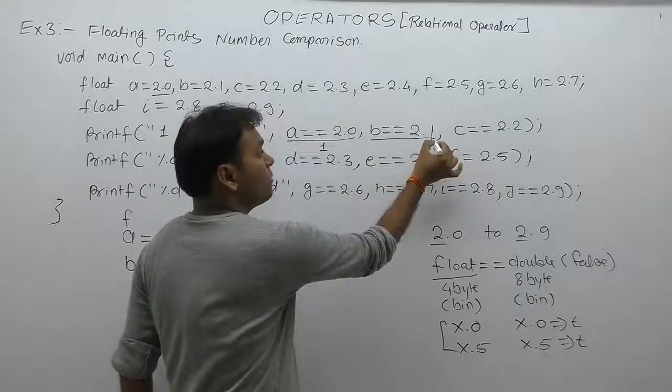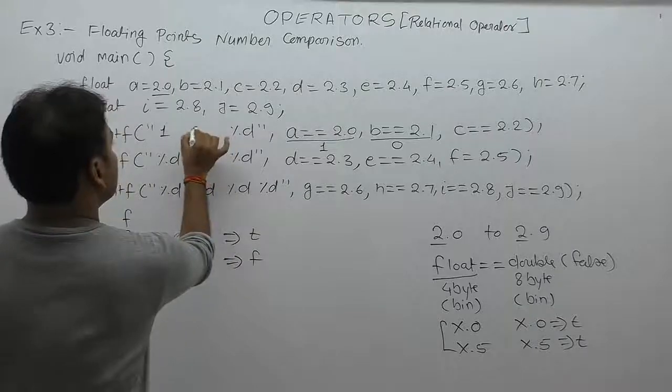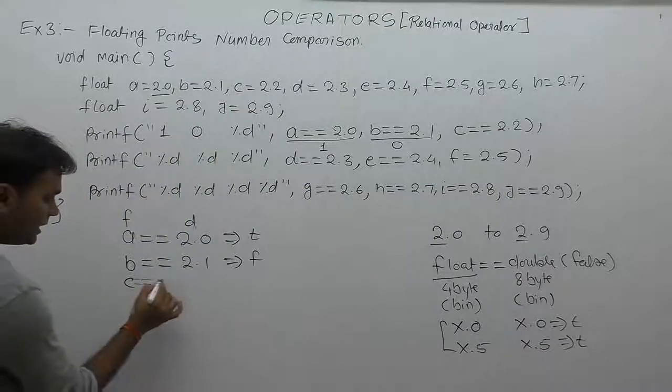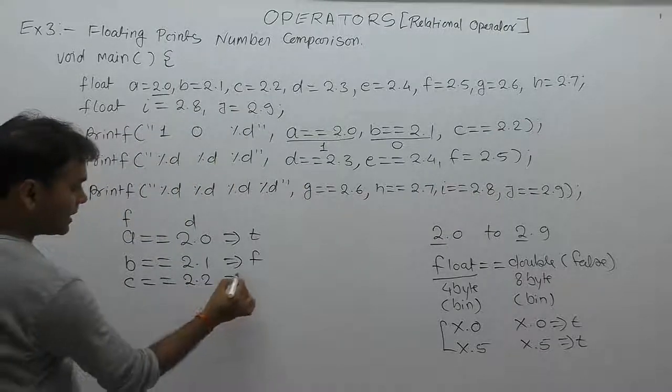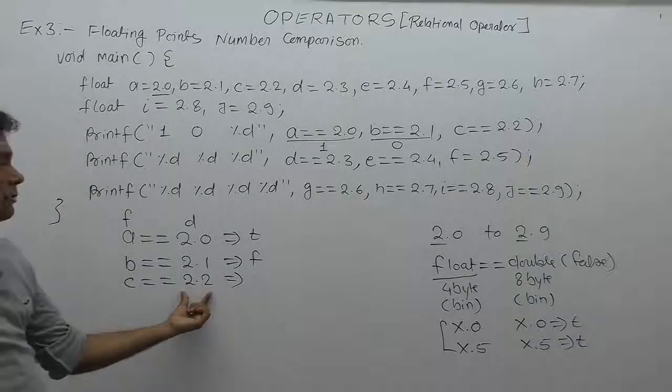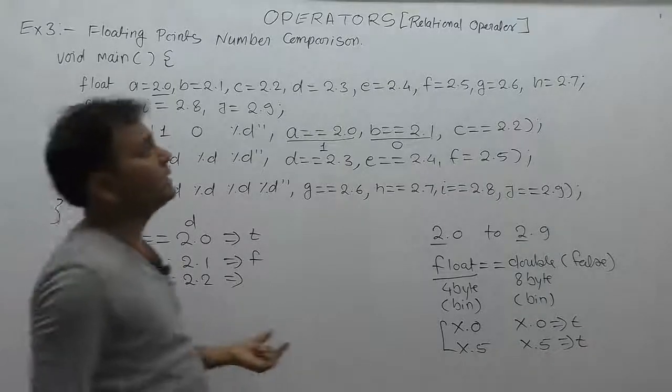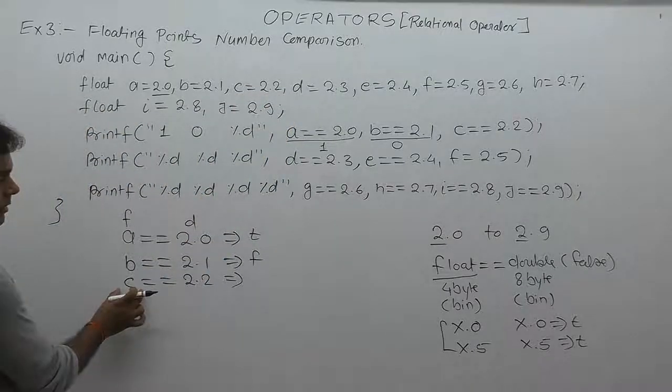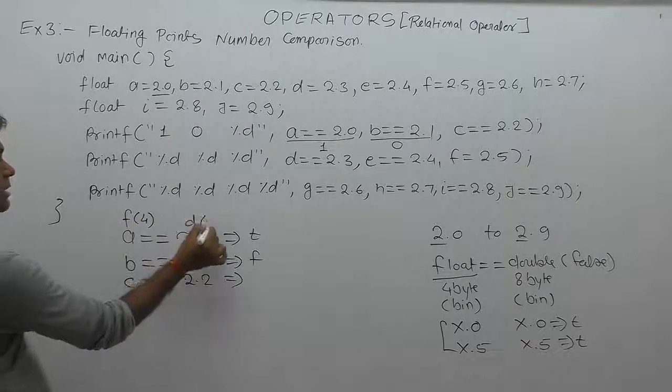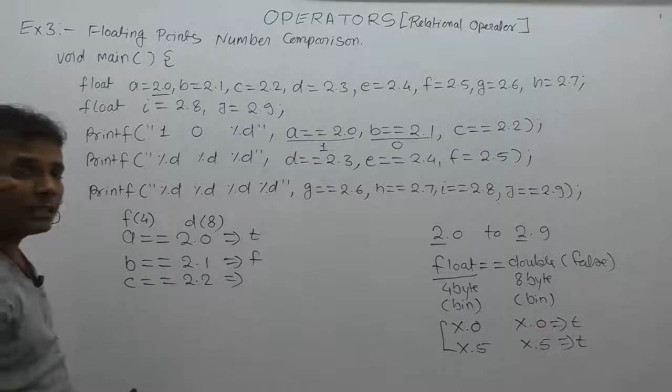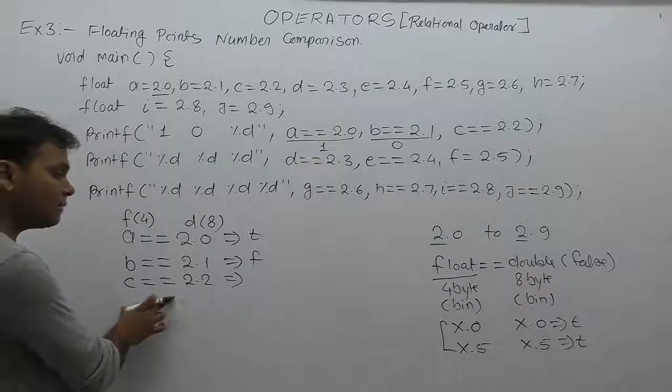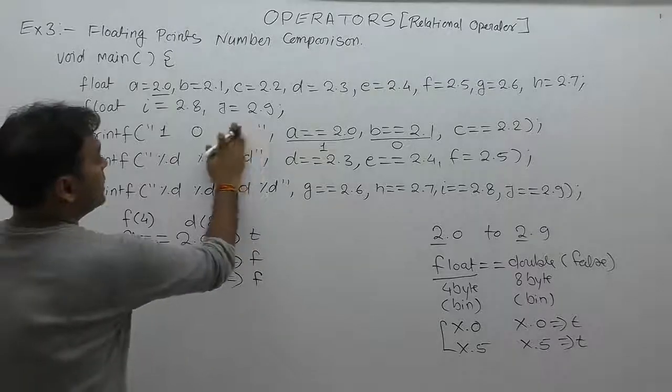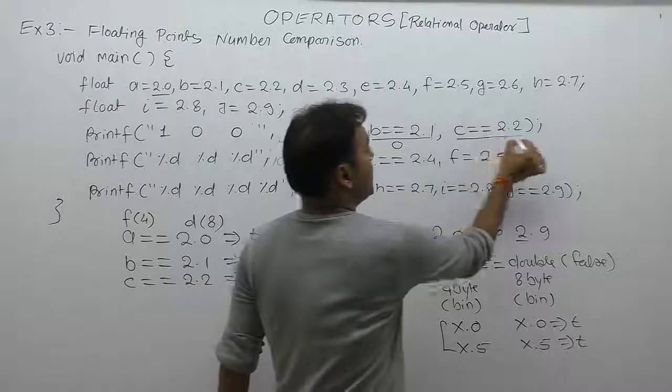Next one, in case c equal equal 2.2. Again check, c's type is float, 4 bytes, and 2.2's default type is double. Float value same stored in c. Also 2.2, but in this case c means float 4 bytes, default is 8 bytes. When same value is represented in 4 byte and 8 byte, the binary representations are different. Physically data same, but binary representation different. Therefore result is false. False means zero, the result will be zero printed.